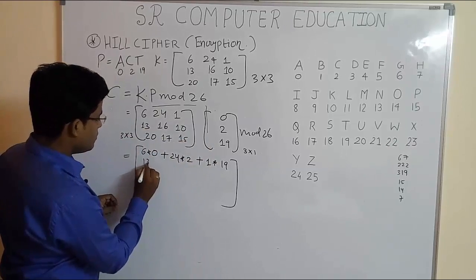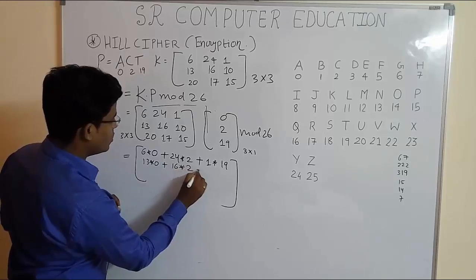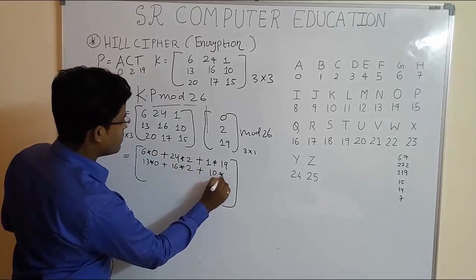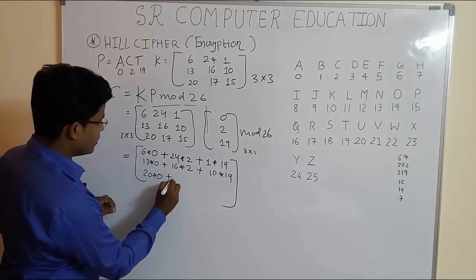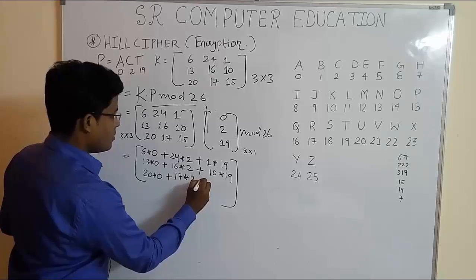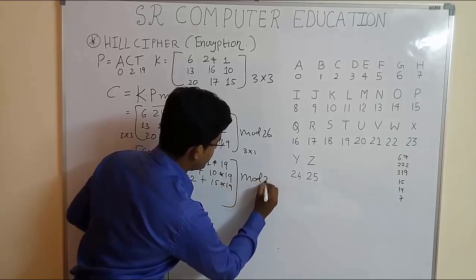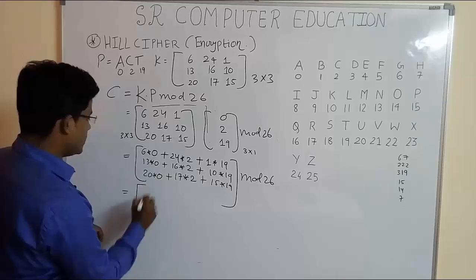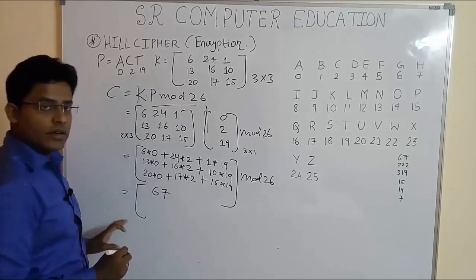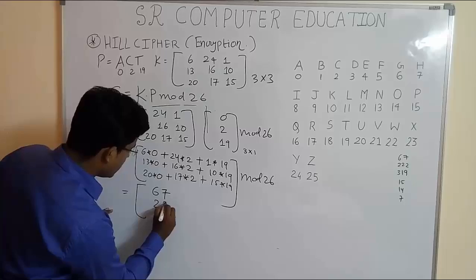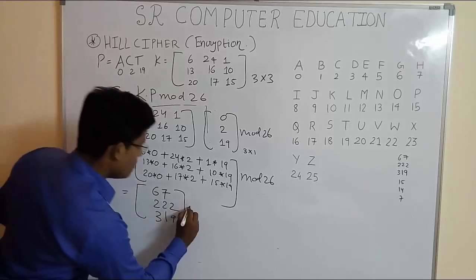Similarly, 13×0 + 16×2 + 10×19 for the second row, and 20×0 + 17×2 + 15×19 for the third row. After multiplying and adding these numbers you will get 67 for the first row, 222 for the second row, and 319 for the third row, mod 26.